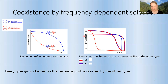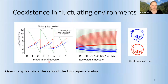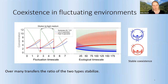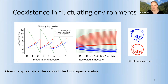This is over one transfer, but when we repeat and repeat, this frequency-dependent selection can stabilize. Here you see one transfer: the nutrients are depleted, the two types grow, and then we reset again. If we continue this on what we call the ecological timescale, these types can stably coexist and their frequencies become stable.